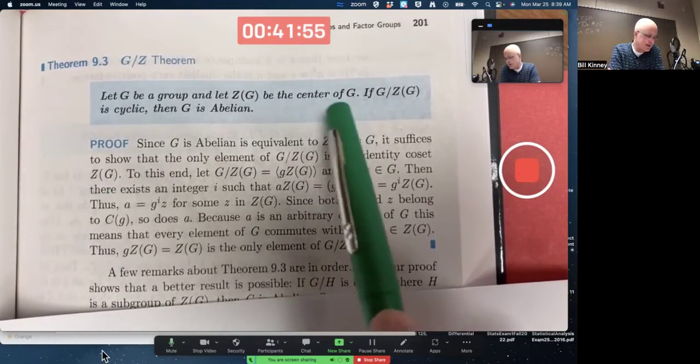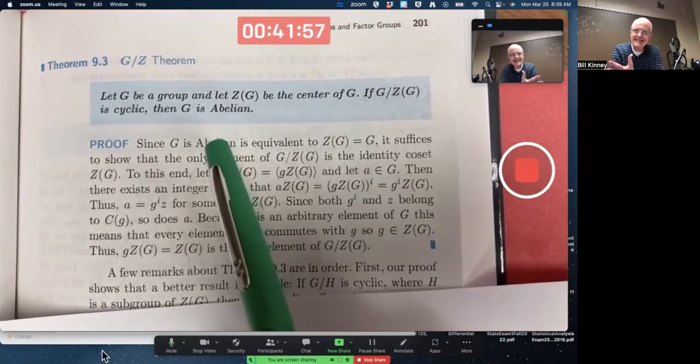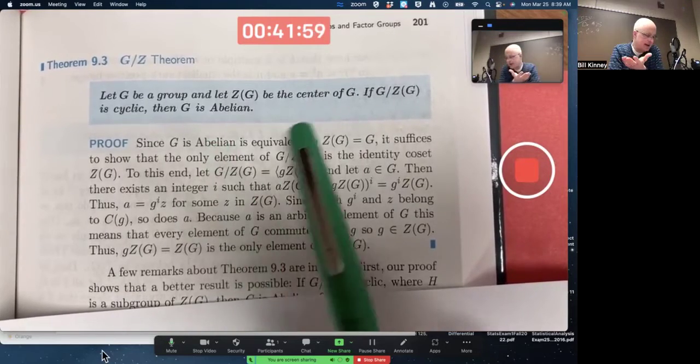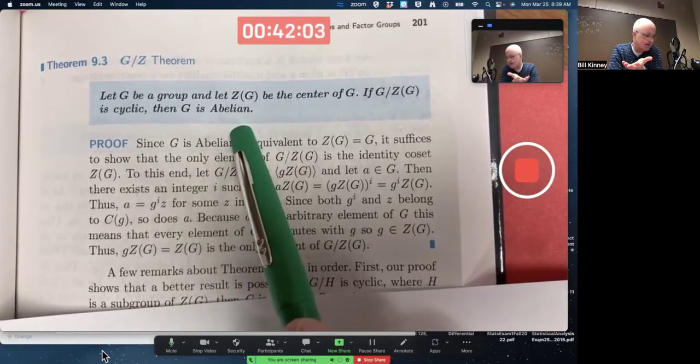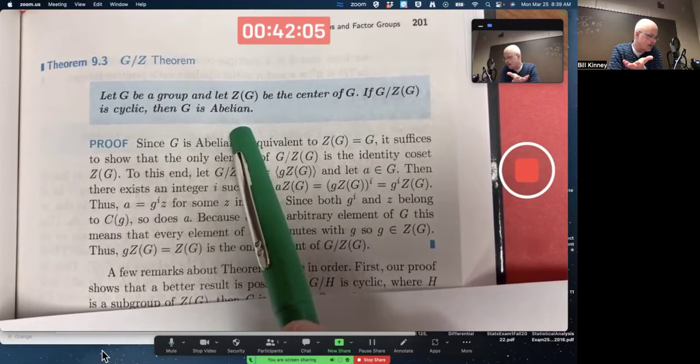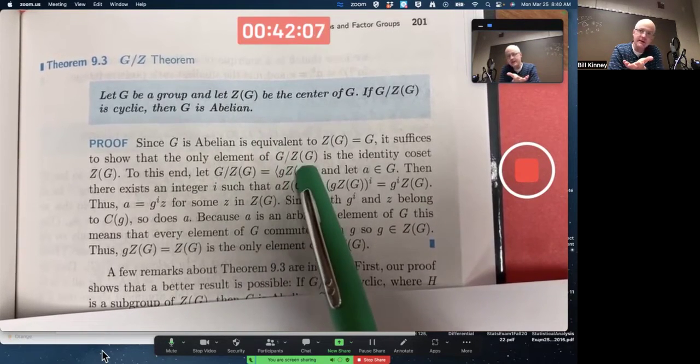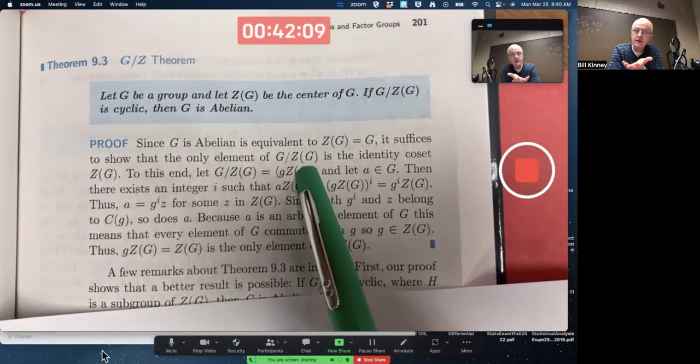it suffices to show that the only element of this factor group is the identity coset. What's their goal? They're trying to prove this if-then statement as is. They're trying to prove that if this factor group is cyclic, then G is abelian. They're trying to effectively show this is trivial, just like I mentioned a few minutes ago. It's only got one element.